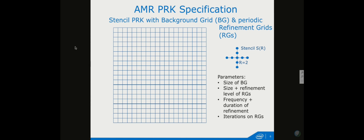Adaptive Mesh Refinement is a good proxy for this kind of phenomenon. We start with a simple two-dimensional background grid and apply an explicit stencil operation — I gave an example of a stencil with radius two, but you can vary that size and also the background grid size. At some point a refinement will appear on this grid. In real applications you'd place it where the error is large; here you simply prescribe where it shows up.